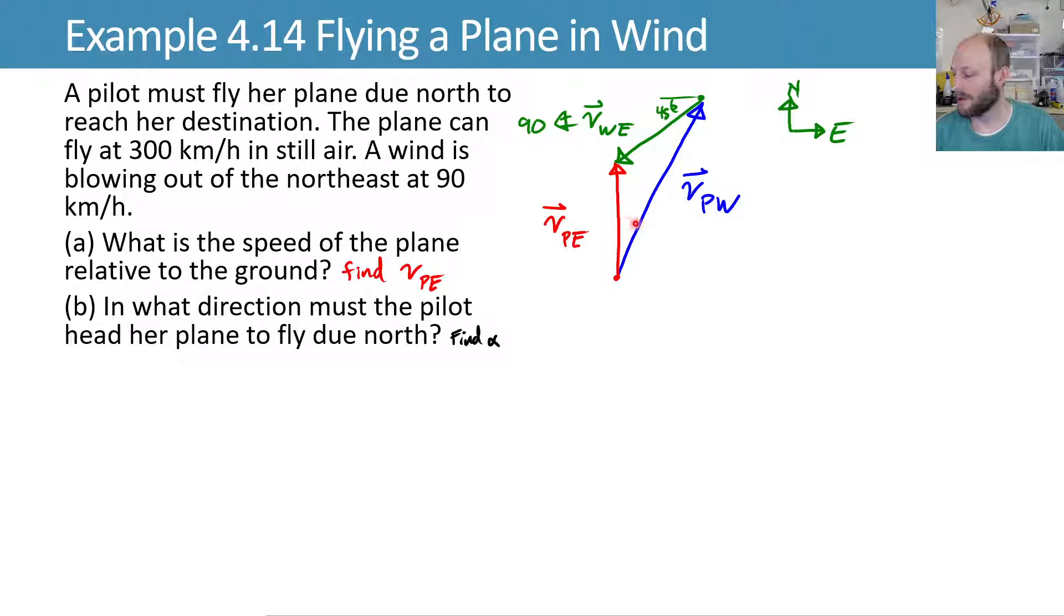We'll specify this angle in here as alpha, and use some other geometry here, alternate interior angles with this 45-degree angle to get this 45 inside, plus the 90 degrees, so this interior angle there is 90 plus 45, or 135. And then we've got some unknown angle beta in the corner.